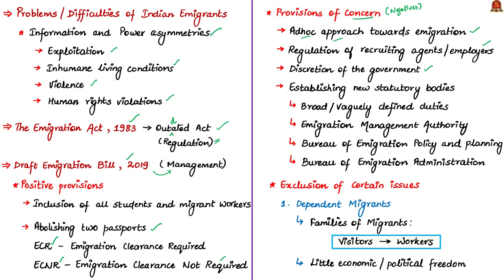The bulk of the draft bill focuses on establishing new statutory bodies. The authors tell that the draft bill has given some broad and vaguely defined duties to these statutory bodies. Some of the statutory bodies mentioned in the draft bill include the Emigration Management Authority, the Bureau of Emigration Policy and Planning, and the Bureau of Emigration Administration.